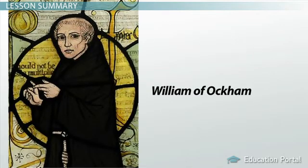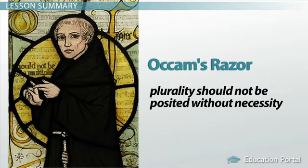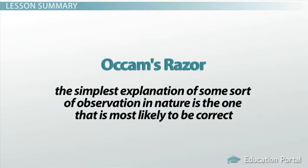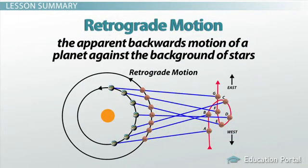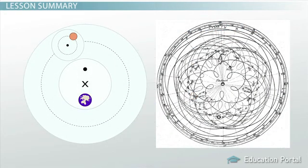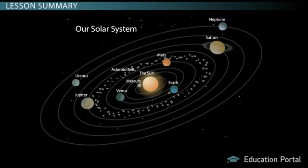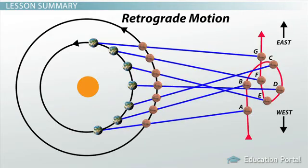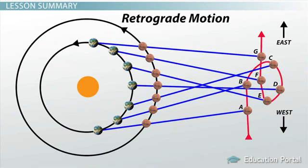In summary: William of Occam was a Franciscan philosopher for whom Occam's Razor is named. His principle states that the simplest explanation of an observation in nature is the one most likely to be correct. Geocentrism forces very convoluted explanations of retrograde motion with complex circles upon circles, whereas once you recognize that planets revolve around the Sun and move at different speeds, retrograde motion is easily explained — just like a car on a highway passing a slower one. Retrograde motion is therefore an illusion, and the simpler heliocentric theory prevails.